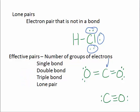So if you look at this carbon here, it has two effective pairs, even though it has four lines. And you can see that this carbon has two effective pairs around it, one triple bond and one lone pair. So it's important to be able to count that.